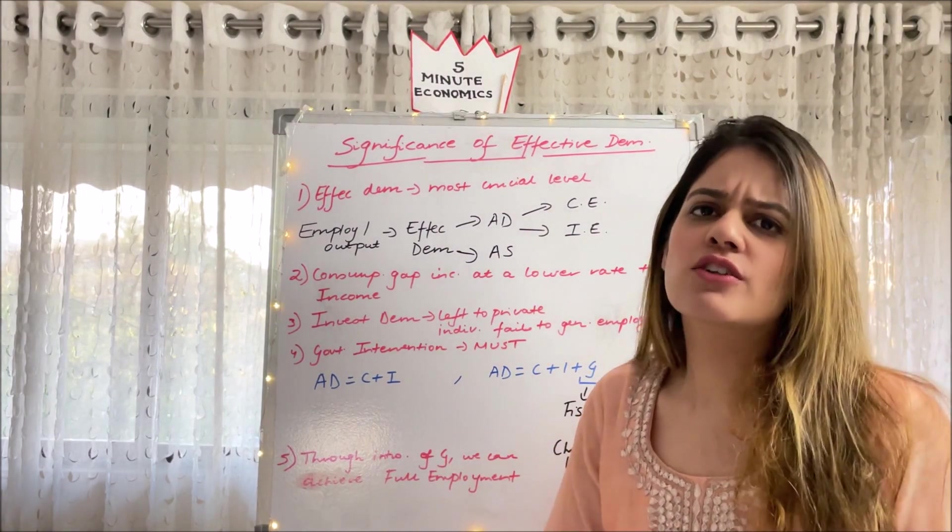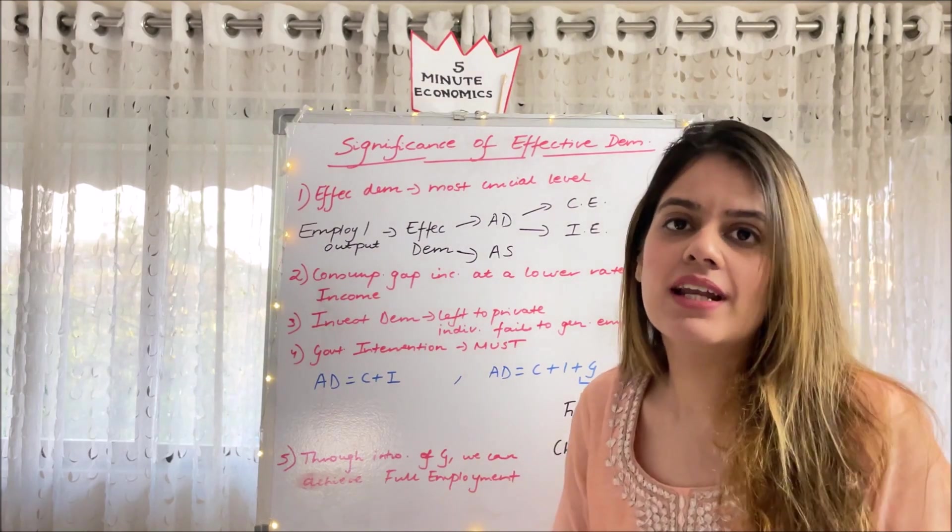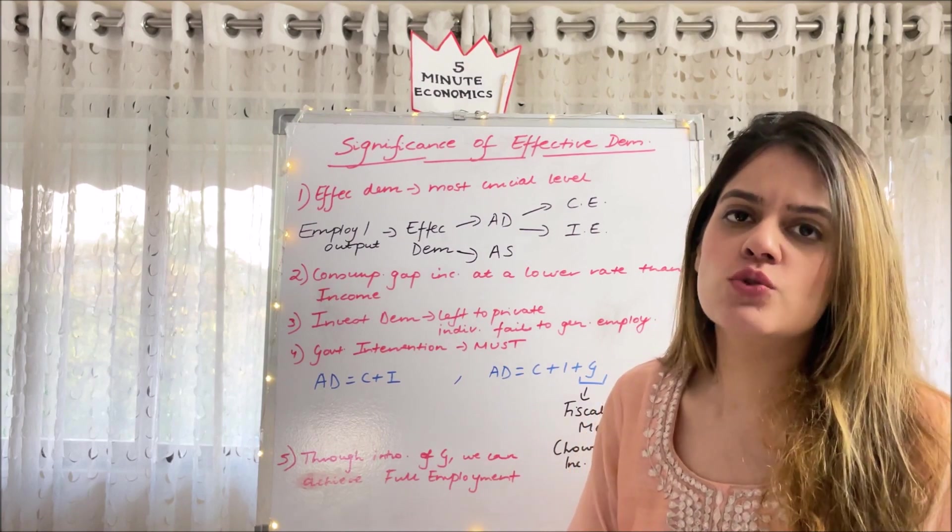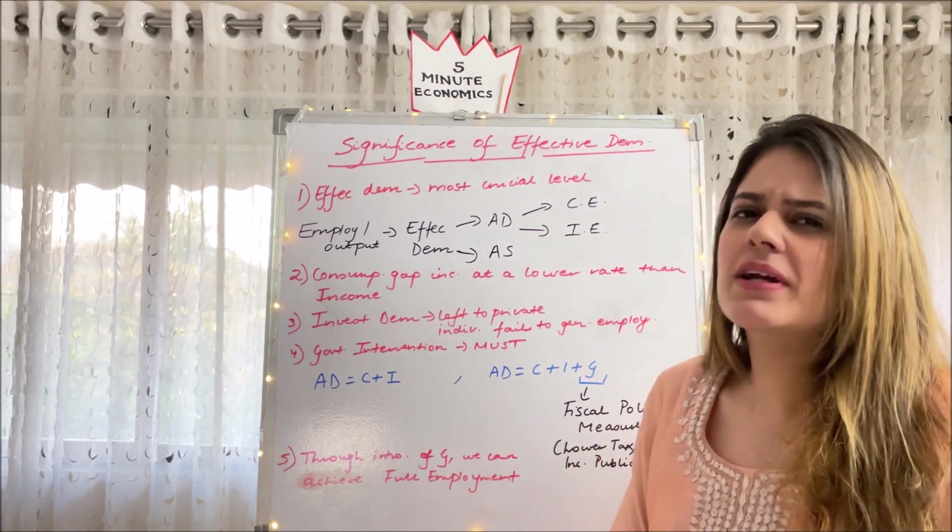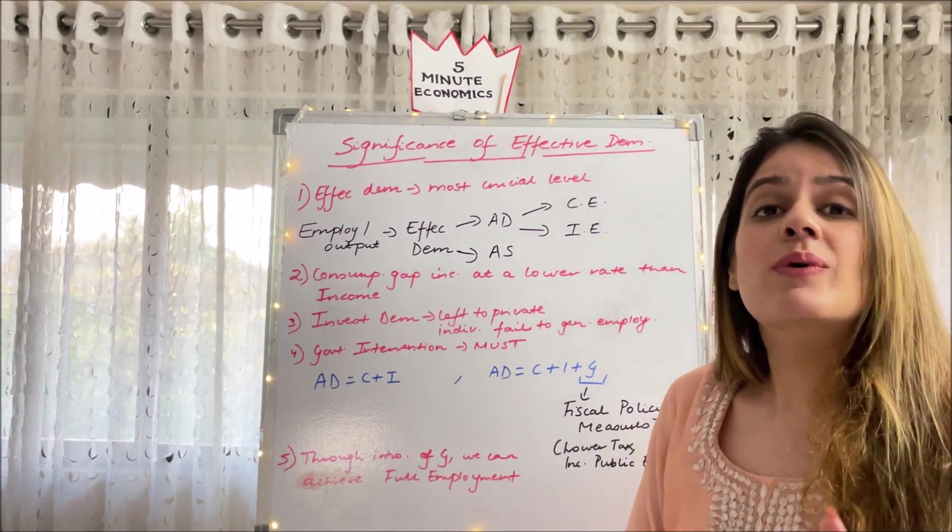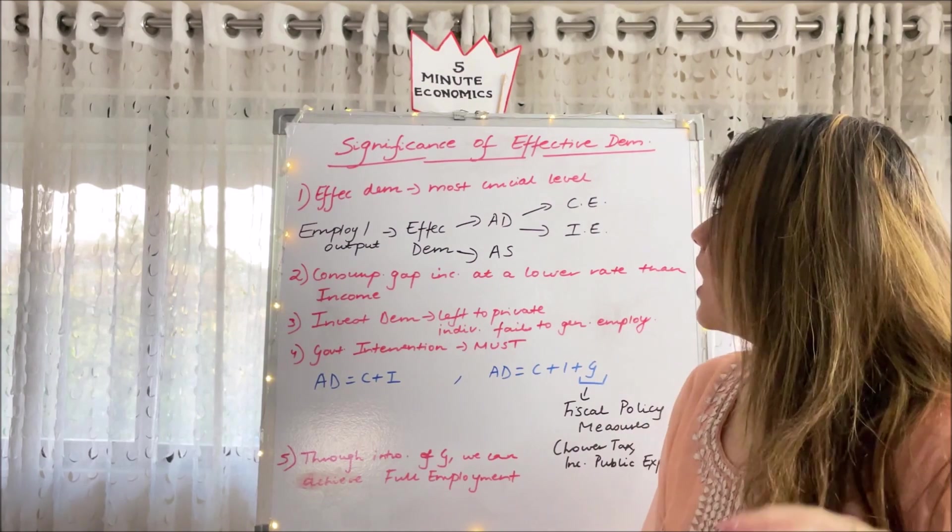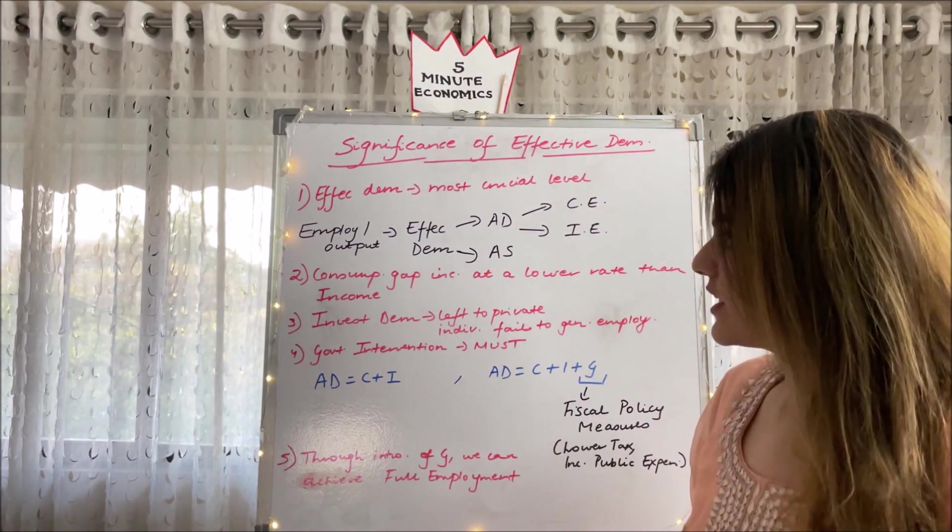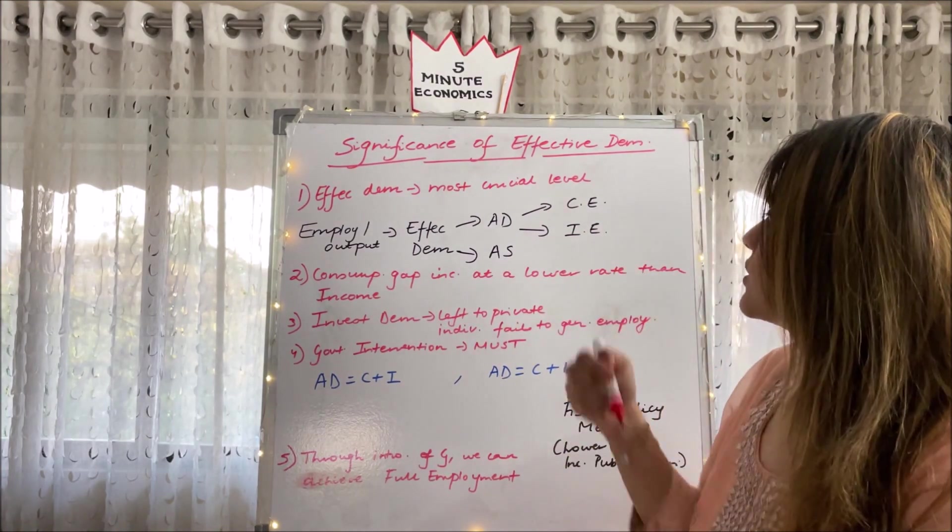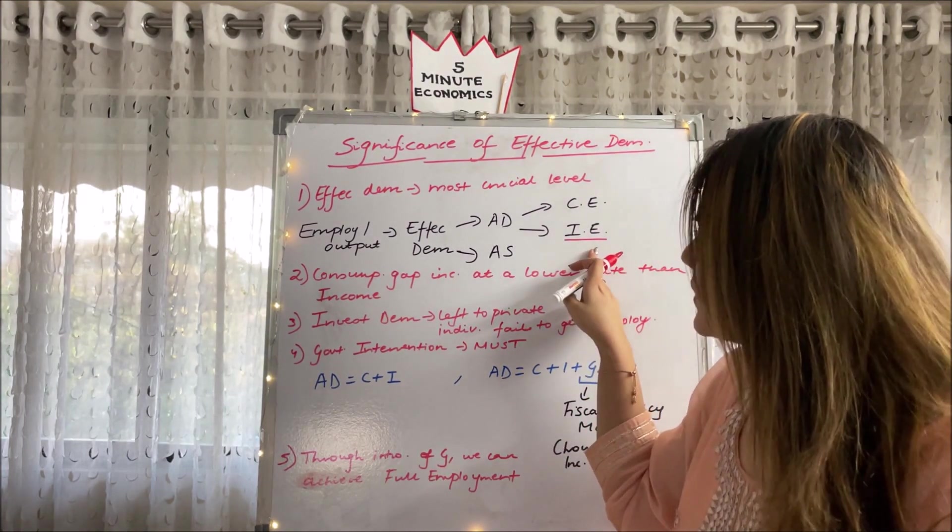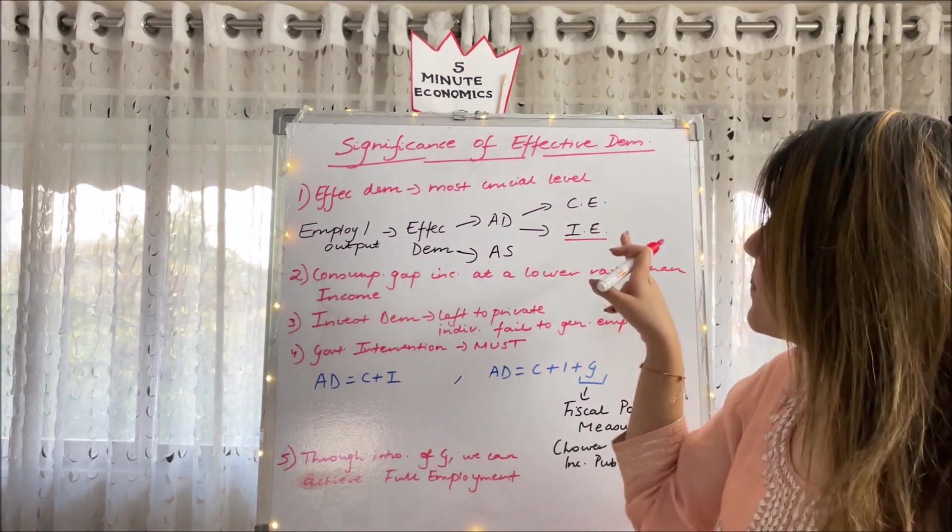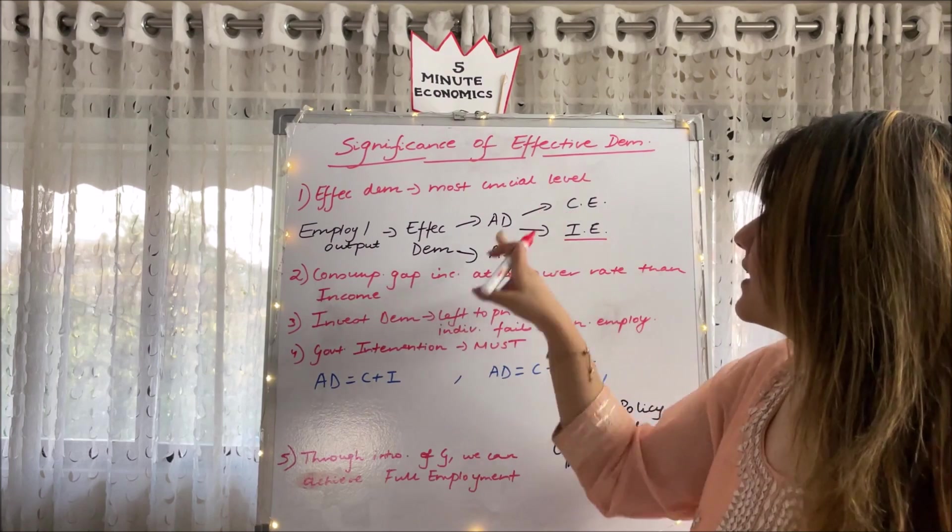Why is that gap created when we talk about consumption expenditure? Because when our income increases, our consumption does increase, right? Like if you are earning 10 lakhs and spending 10 lakhs, for example, if our income reaches 20 lakhs, our consumption wouldn't be 20 lakhs now. Maybe it might be 18 lakhs, but those two lakhs what will we do? We will save. So basically that gap is created under the consumption expenditure, so the onus lies on investment expenditure.